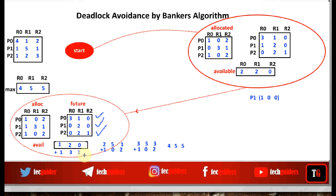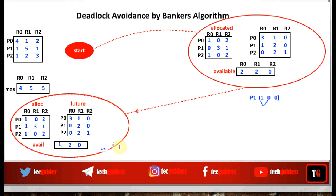The next state is a safe state, so there is no problem with granting this request and the system will move to this next state. The system will always remain in a safe state. Whenever a request is received, the system checks whether granting that request will move it to a safe or unsafe state using banker's algorithm. If the next state is safe, the request is granted; if it is unsafe, the request is not granted and the system remains in its previous safe state. This is how the deadlock avoidance scheme works with banker's algorithm.